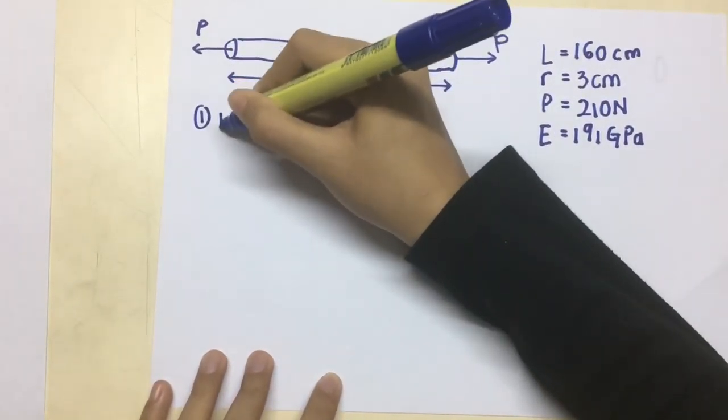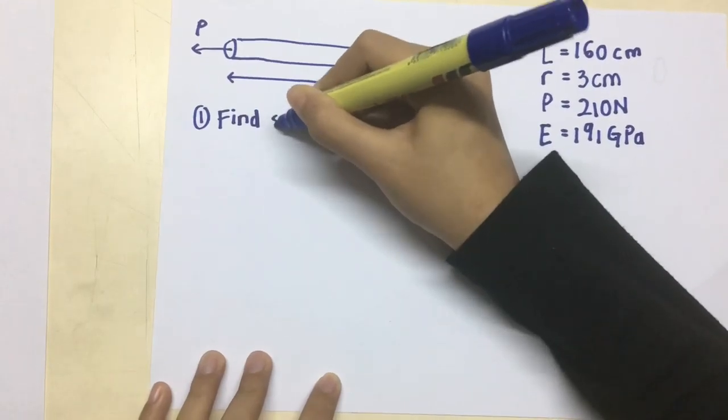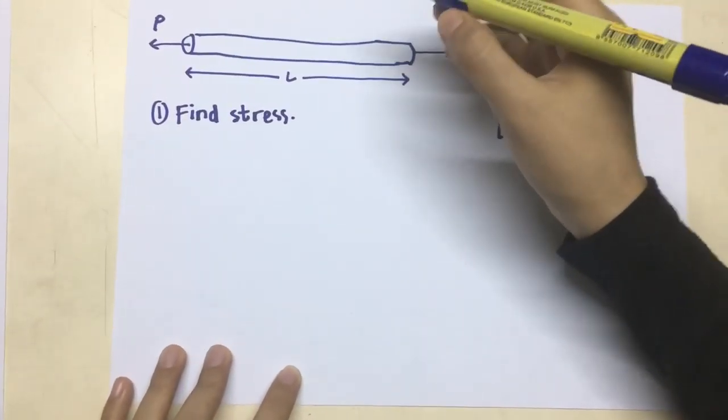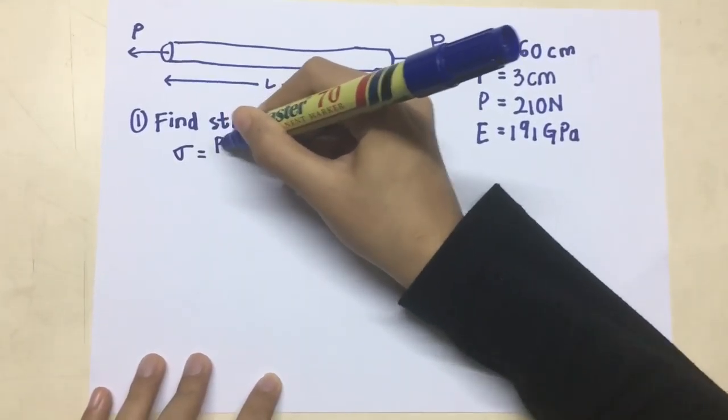So, after we have all the information, we can start calculating. First, I will calculate the stress of the object using the formula rho equals to P over A.